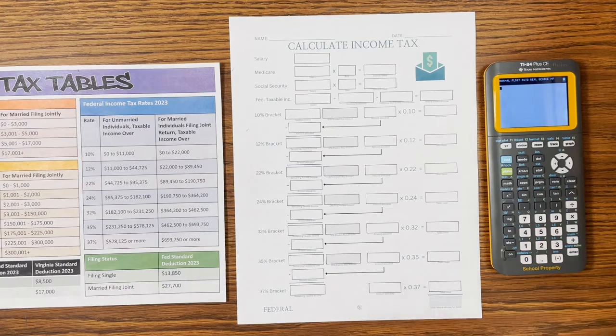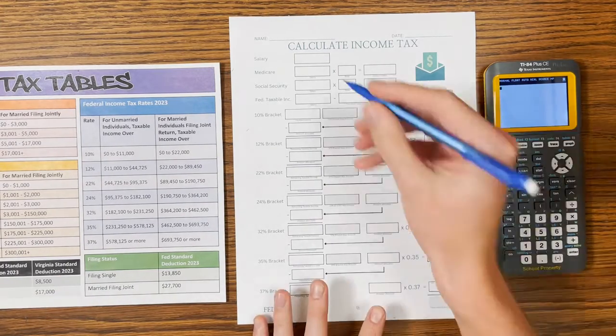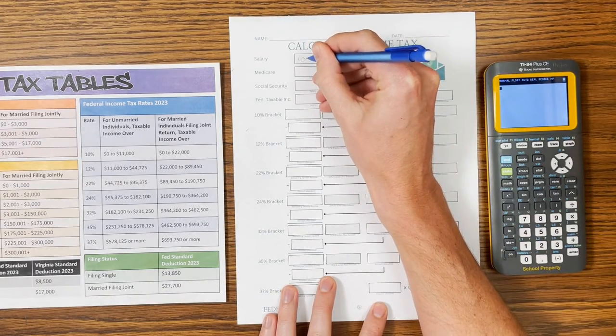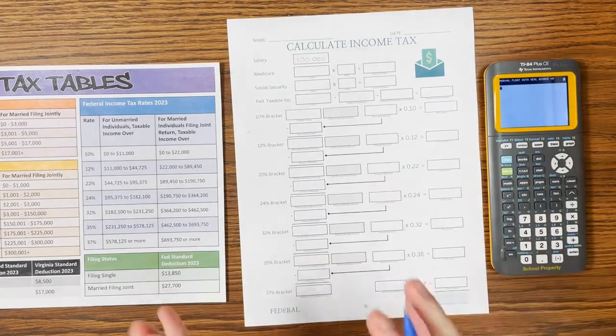Hey everybody, we're going to do an income tax calculation for a federal income tax return. We're going to use a salary of $100,000 for this example, and you're just going to put that into the top salary box.